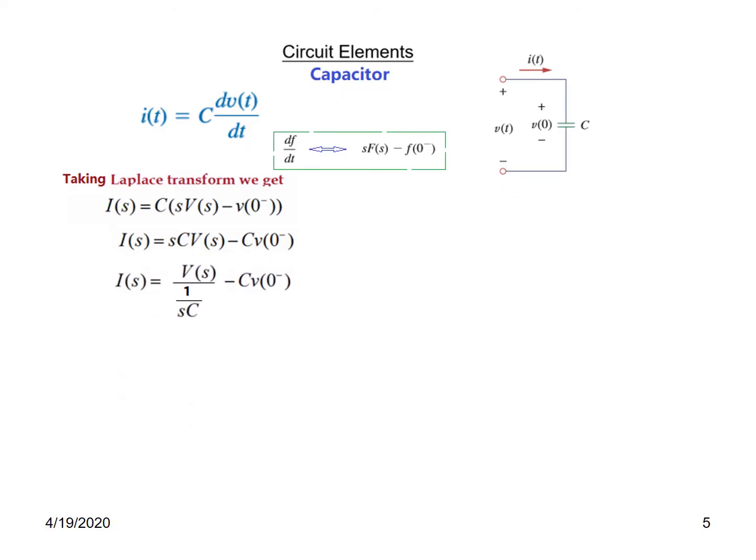From here we can open this. This current has two paths so we can represent it by writing V(s) over some admittance that is 1 over sC. We are writing V(s) divided by 1 over sC and this remains as it is. So now we can represent it by a circuit like this: V(s) divided by 1 over sC will give us the current I(s) plus another current which is represented by CV(0) and the direction is opposite because of this negative sign. This is one representation.